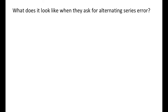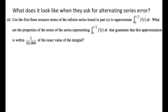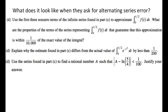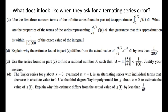Here are most of the released questions that called for alternating series error. One common phrasing: 'use the first three non-zero terms — what are the properties of the terms that guarantee the approximation is within 1 over 10,000?' They'll ask for the properties and give you something you have to be under. Another phrasing: 'explain why the estimate differs by less than...' Sometimes they tell you the polynomial is alternating with individual terms that decrease in absolute value to zero, and they want you to use the third degree polynomial to show your error is less than something.